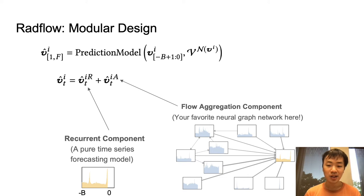Now, the recurrent component is simply a time series forecasting model. It ignores the network structure and simply makes the prediction based on the historical observation of a particular node. In contrast, you can think of the flow aggregation component as your favorite neural graph network. This component aggregates the influence from neighboring nodes.